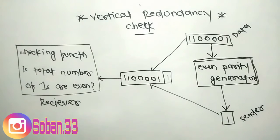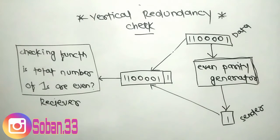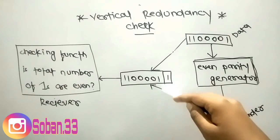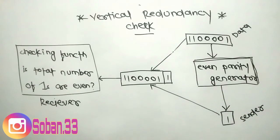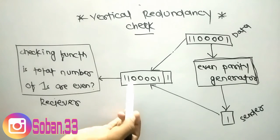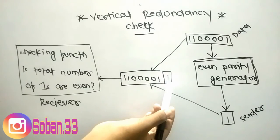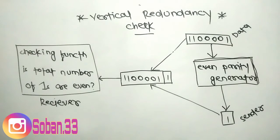Before transmitting, we pass the data unit through an even parity generator. The parity generator counts the number of ones and appends the parity bit to the end. This one is appended to the data. The total number of ones is now four — one, two, three, four — an even number.